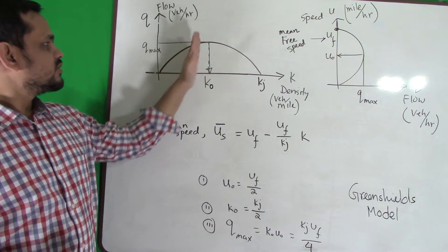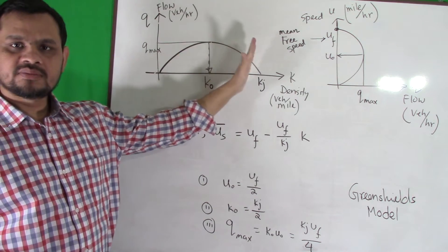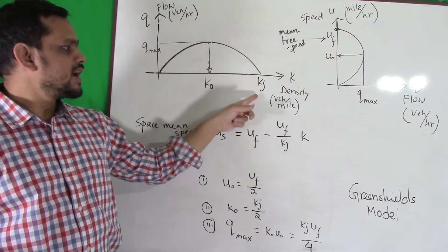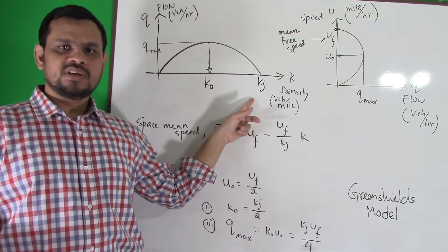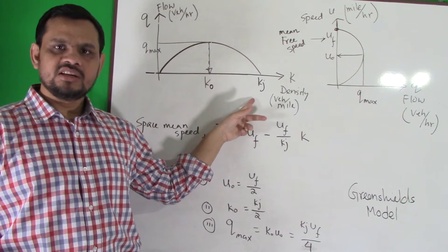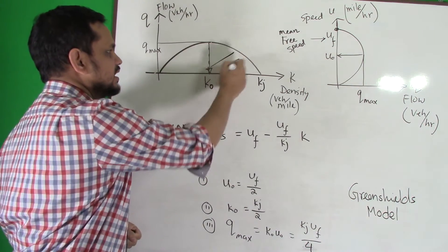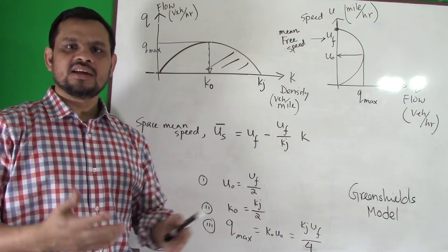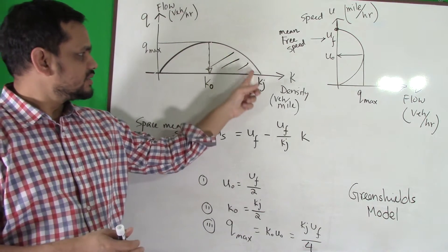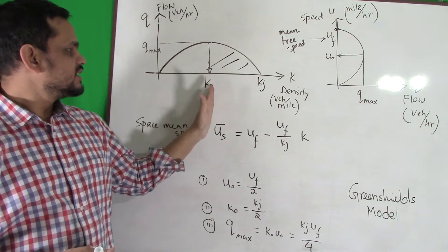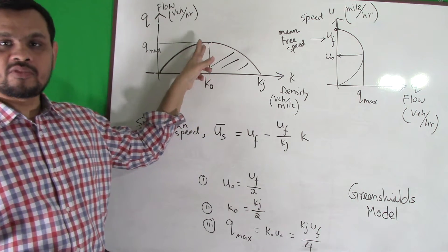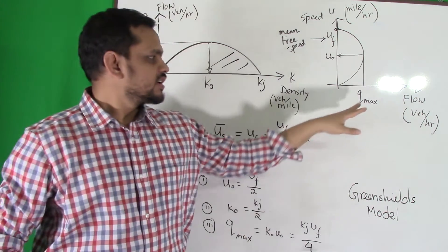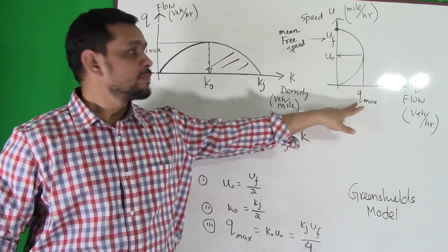After this point, traffic jam starts, meaning flow will decrease even though there are many vehicles on the road. Whatever traffic jam you see on the highway — that is where density is very high but flow is very low. Flow decreases once density exceeds an optimum point. This optimum density is the key value. The same idea applies to speed versus flow.